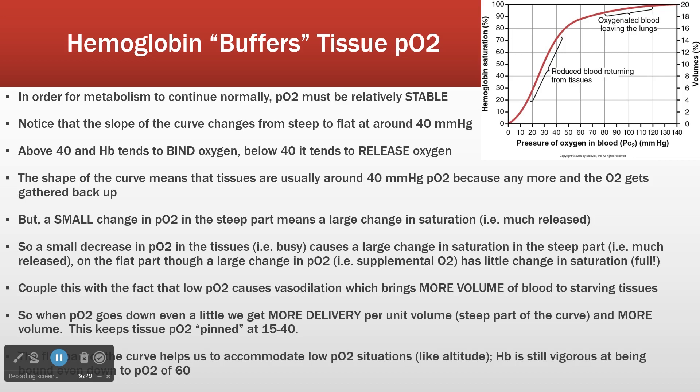Low PO2 causes vasodilation, which brings more volume. When a tissue becomes busy, O2 drops, and you get vasodilation at the front — autoregulation at the pre-capillary sphincter — bringing more blood flow in. That increased blood flow in the region of poor oxygenation results in a large decrease in saturation and a big delivery of oxygen, essentially keeping O2 pinned between about 15 and 40 most of the time.